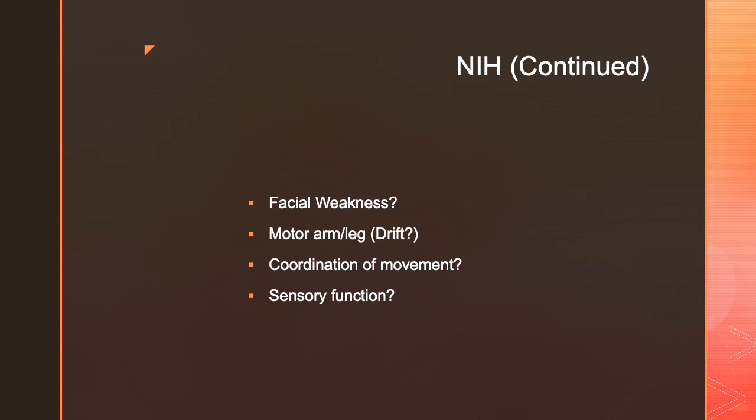Then we look for ataxia — their general coordination of movement. We do this by having them take their heel and rub it down their leg to see if they can coordinate that activity. We also check sensory function to see if there's any decreased sensation — using a cotton swab or sometimes a blunt needle, depending on their function — to see if they have decreased sensation on one side versus another.